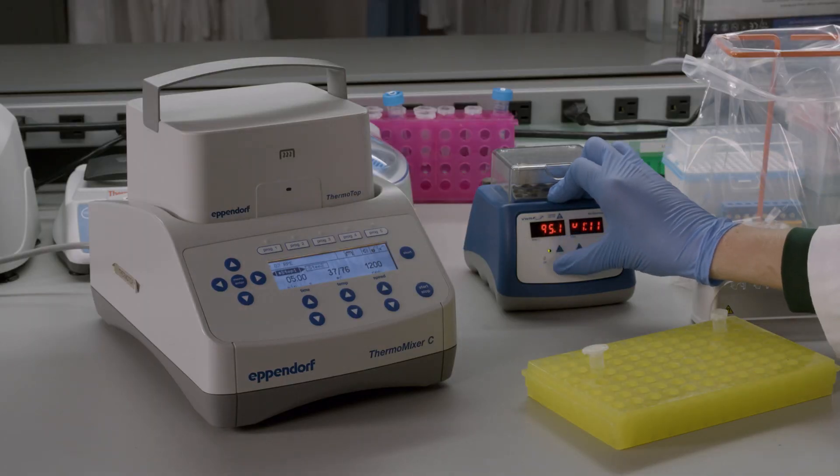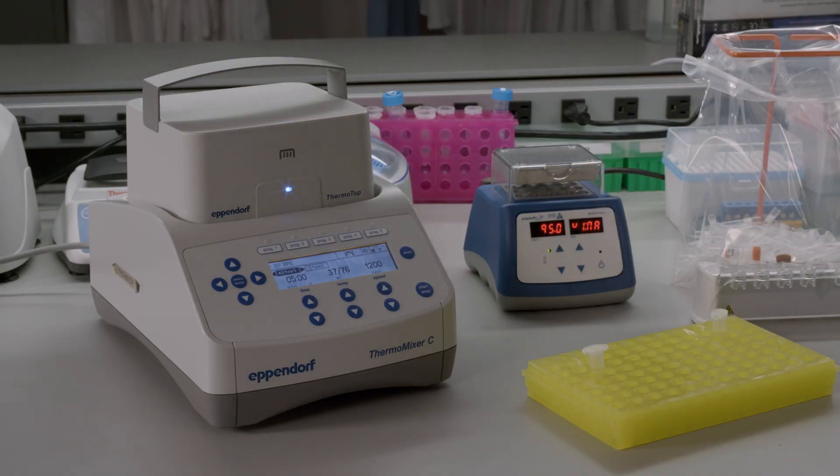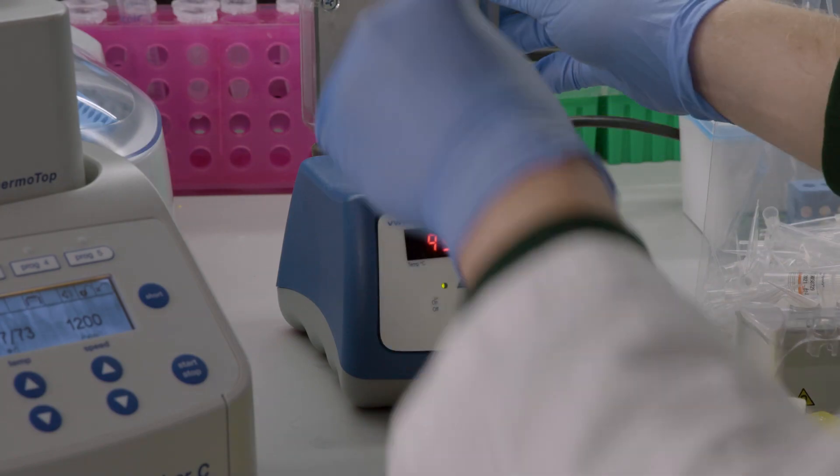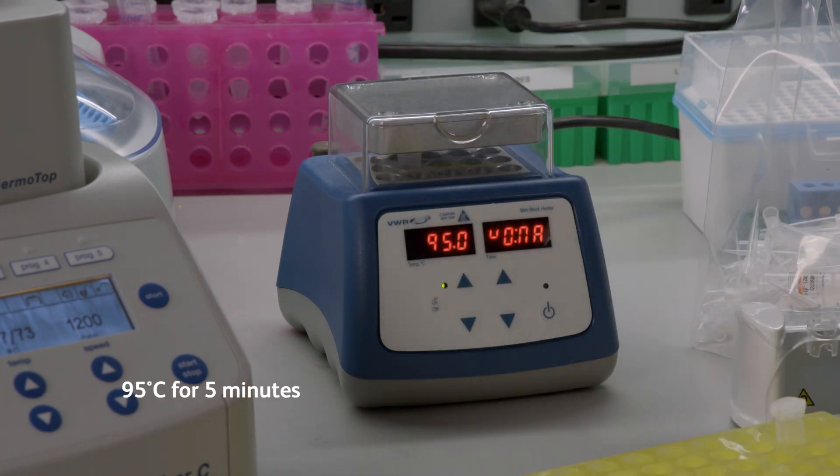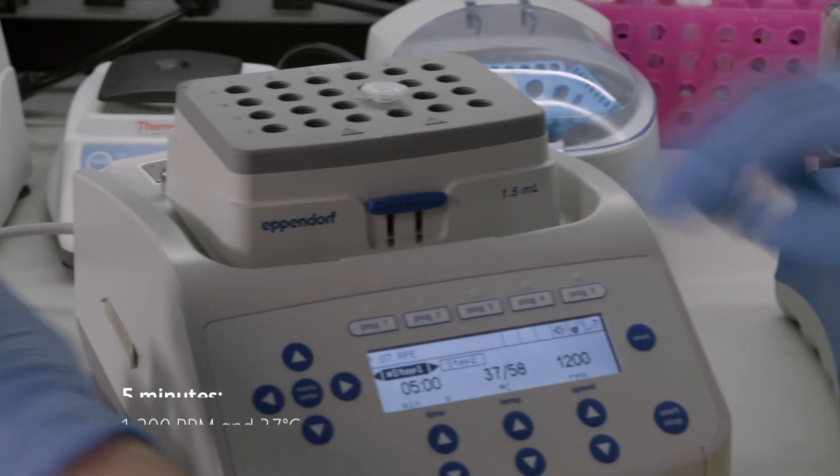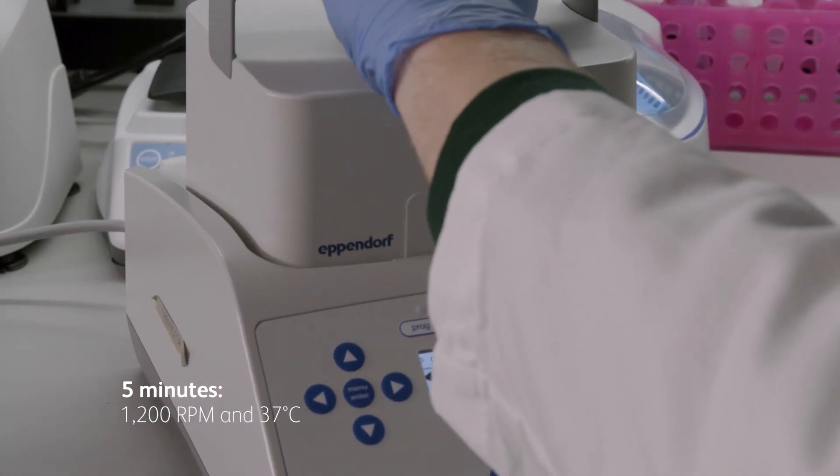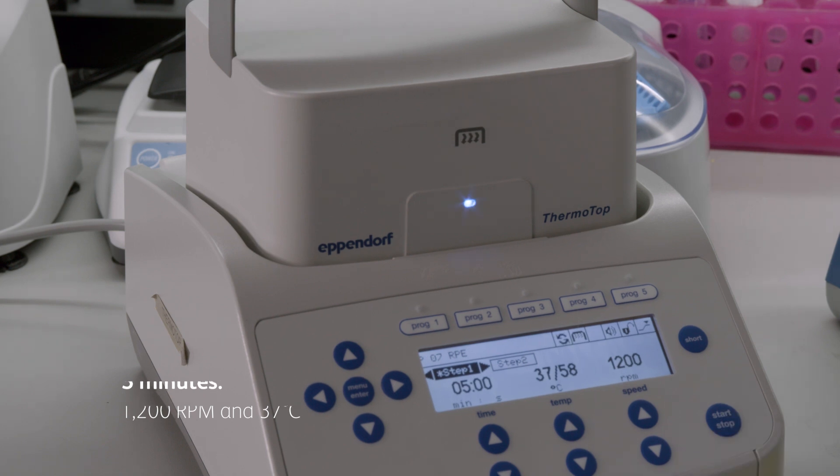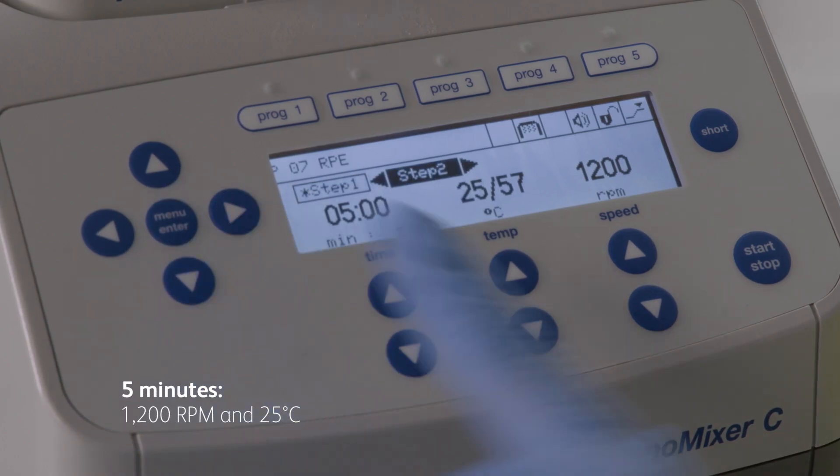Now, incubate this reaction mix in a specific three-step order and prepare the extension enzyme mix while the incubation takes place. To incubate the reaction mix, place the tube in the heat block at 95 degrees Celsius for 5 minutes without shaking. Next, use the thermomixer for 5 minutes at 1200 RPM and 37 degrees Celsius. Finally, use the thermomixer for 5 minutes at 1200 RPM and 25 degrees Celsius.